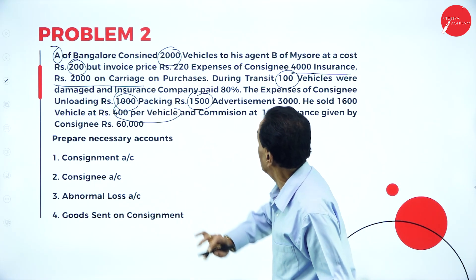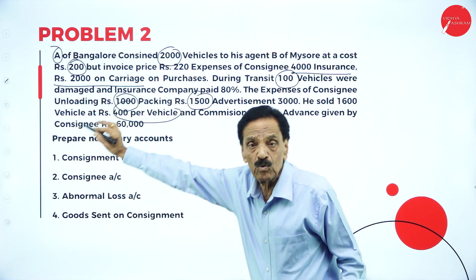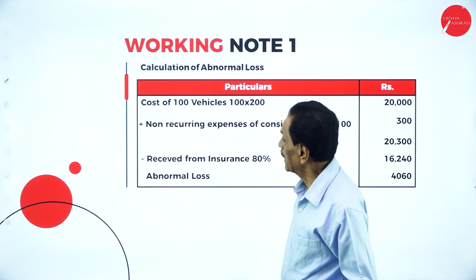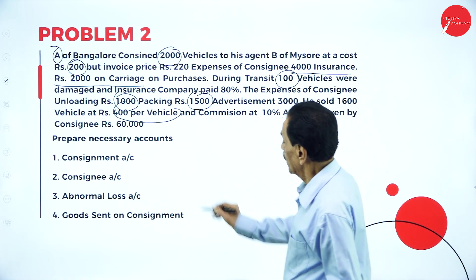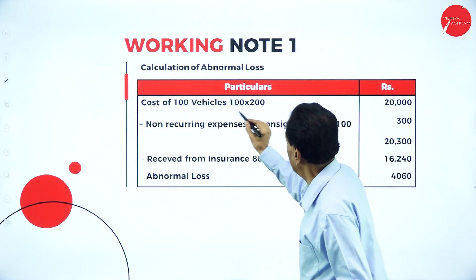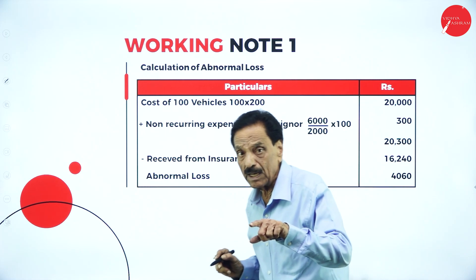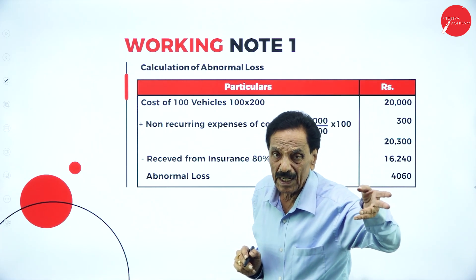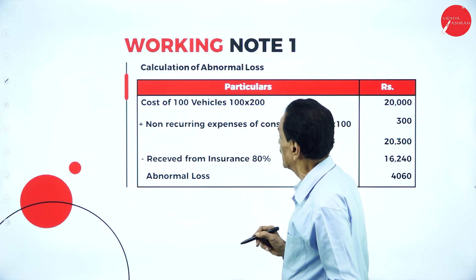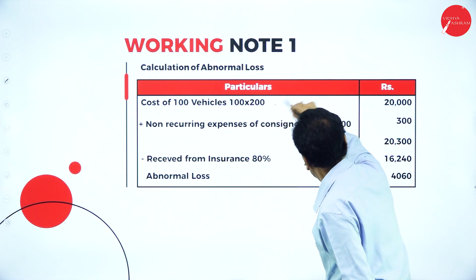A is the consignor and B is the consignee. A is residing in Bangalore and B is residing in Mysore. How many vehicles were damaged? 100 vehicles. Cost of 100 vehicles: 100 × 200 (cost price) = Rs. 20,000. We take the cost price because the goods have not yet reached the consignee.